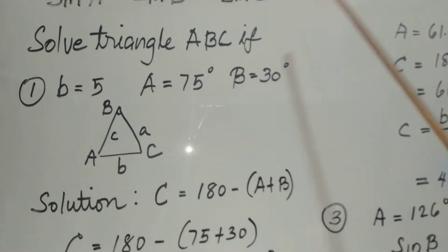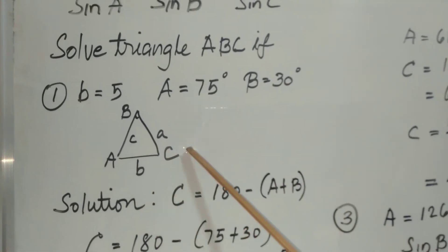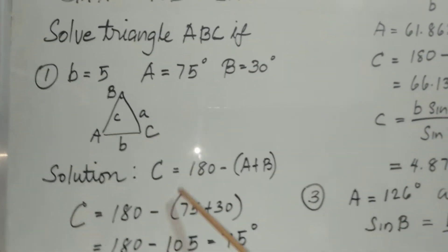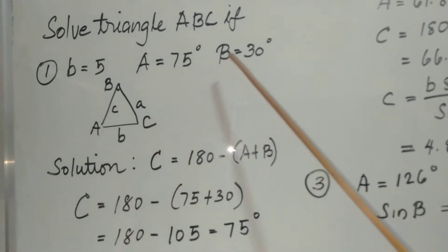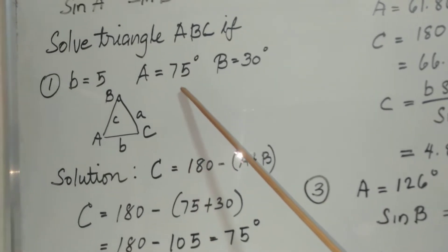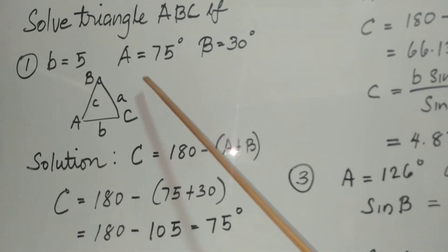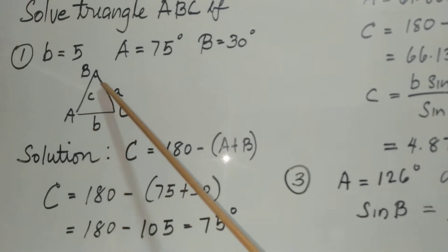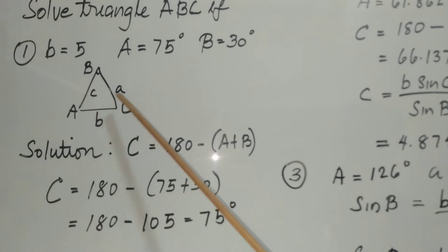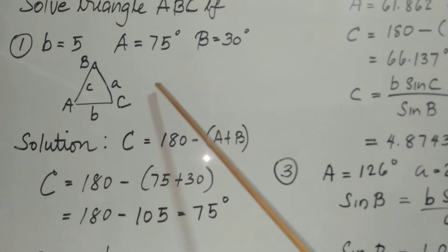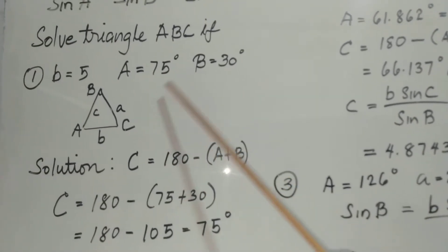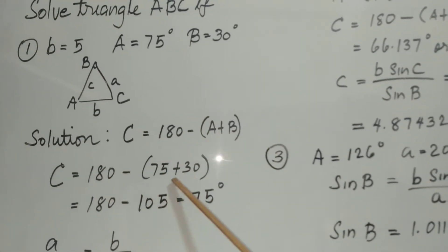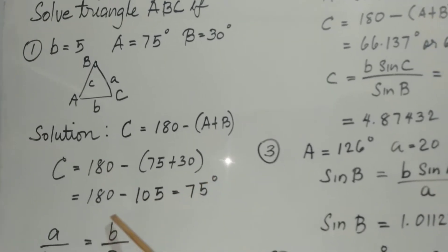We go directly to the solution. We're given a side and its opposite angle, and one other angle equal to 30 degrees. To compute for angle C, since we know that the sum of the angles of any triangle is 180 degrees, we subtract the sum of the two known angles from 180. So C equals 180 minus the sum of 75 and 30, which is 105. Therefore angle C equals 75 degrees.